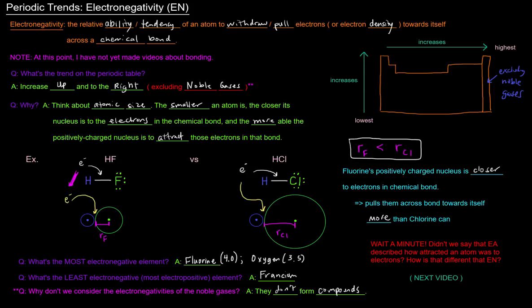But now, hang on a second. Wait a minute. Didn't we say that electron affinity described how attracted an atom was to electrons? How was that different from what we just talked about here in electronegativity? Well, to answer that question and kind of clear up the differences, check out the next video.